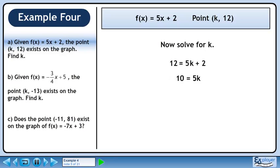Subtract 2 from both sides of the equation. Divide both sides by 5. The answer is k = 2.